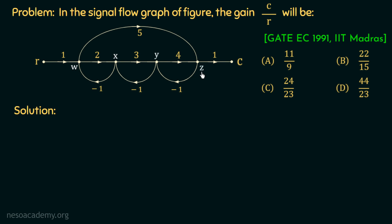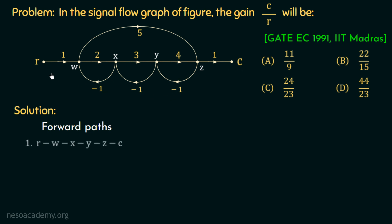Now our first step in Mason's gain rule is to identify the forward paths. To find the forward paths, we need to start from the input node R and move towards the output node C. If we start from input node R, move to node W via a branch, then to node X, then to node Y, then to node Z, and finally to node C, then this will be the first forward path: R, W, X, Y, Z, C.